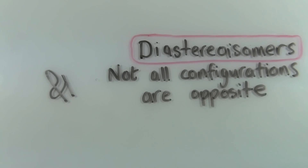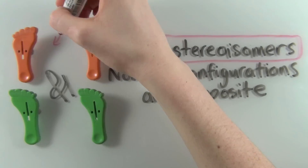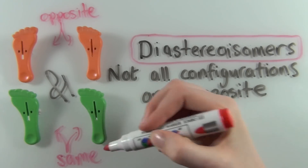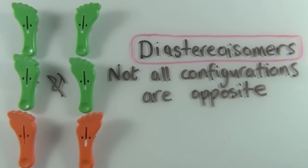On the other hand, with diastereoisomers, this is not so — not all corresponding configurations are going to be opposite. So in this example, we have a left orange foot and a right green foot, but in the other diastereoisomer, we have a left orange foot and a right green foot again, which makes them not mirror images of each other.